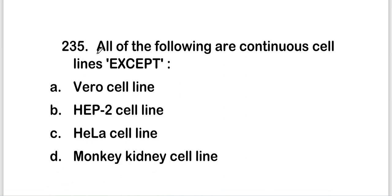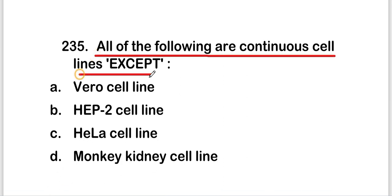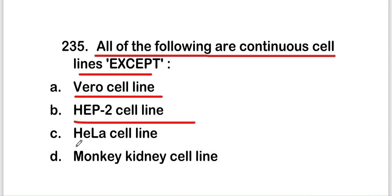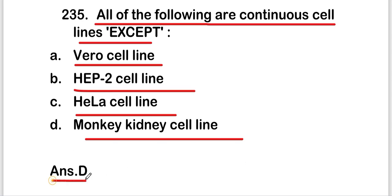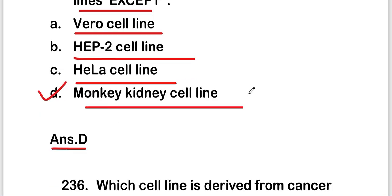The next question: all of the following are continuous cell lines except — Vero cell line, Hep-2 cell line, HeLa cell line, or monkey kidney cell line. The right answer is option D — monkey kidney cell line is not a continuous cell line.